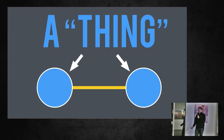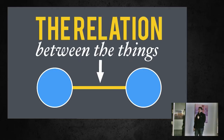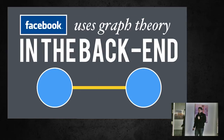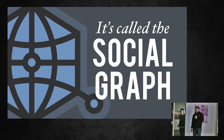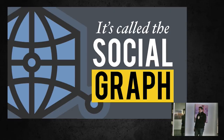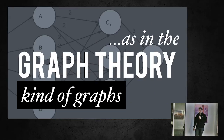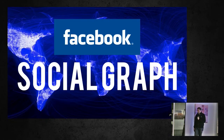The nodes represent real-world things, and the relation between those things — the edge — represents the relation between those two things. Facebook uses graph theory in their backend to represent their data, and it's called the social graph. You may have heard it before. Notice the keyword: graph — just like in graph theory, the same type of graph.